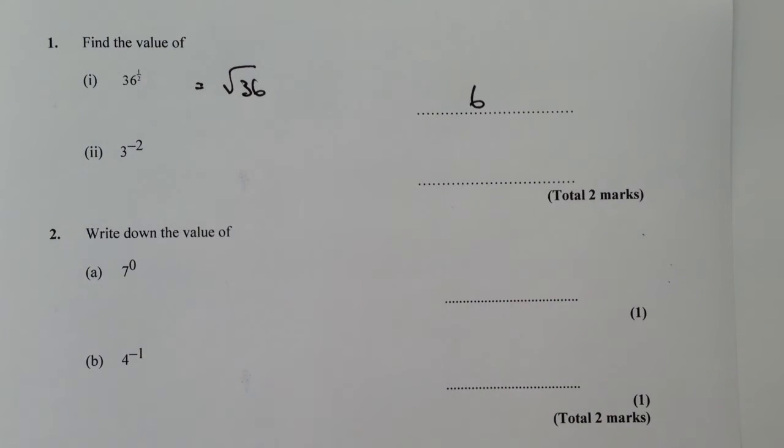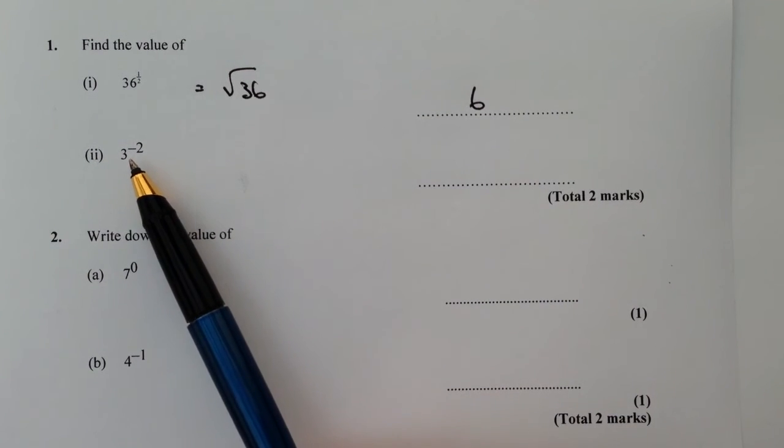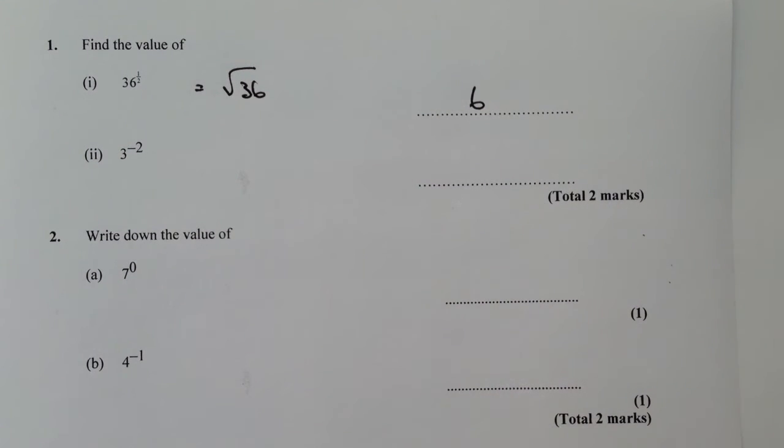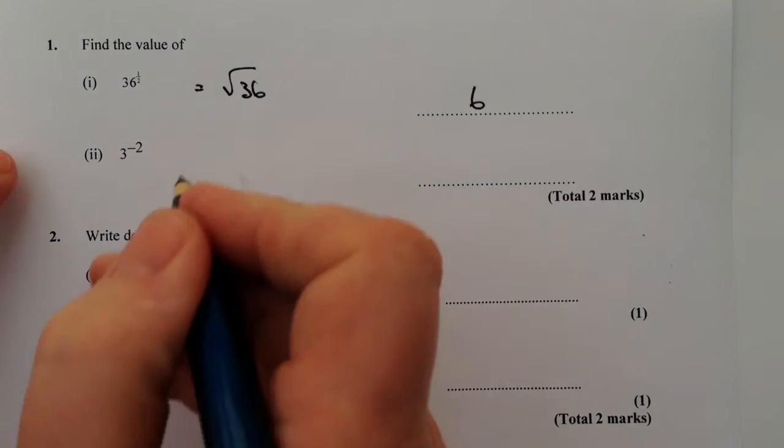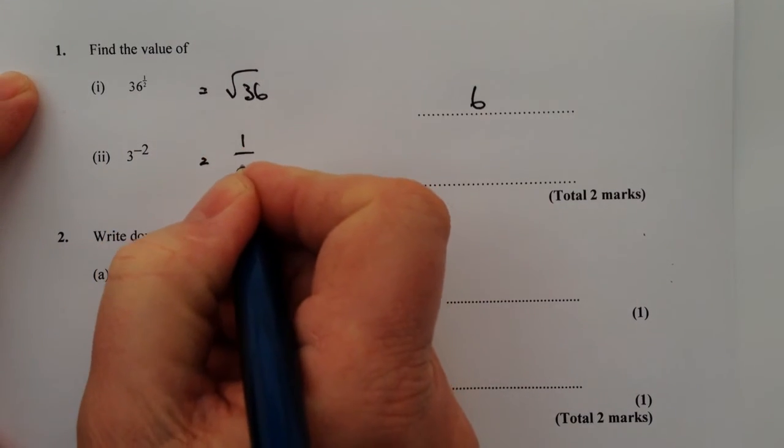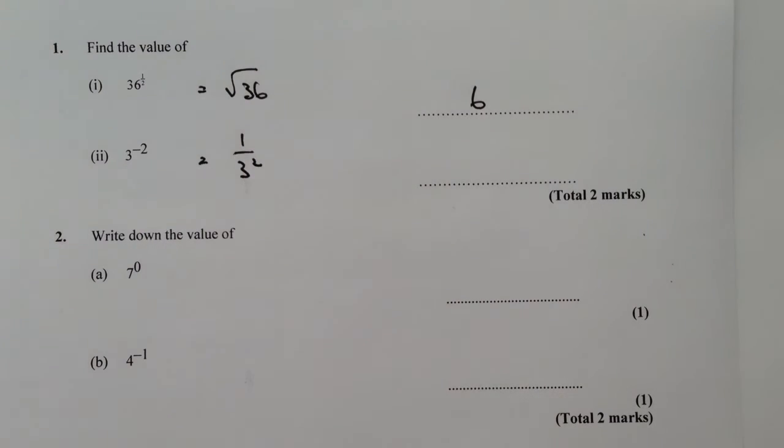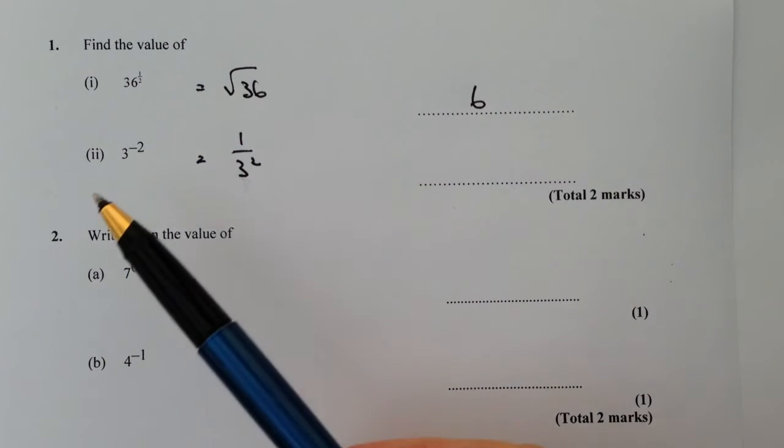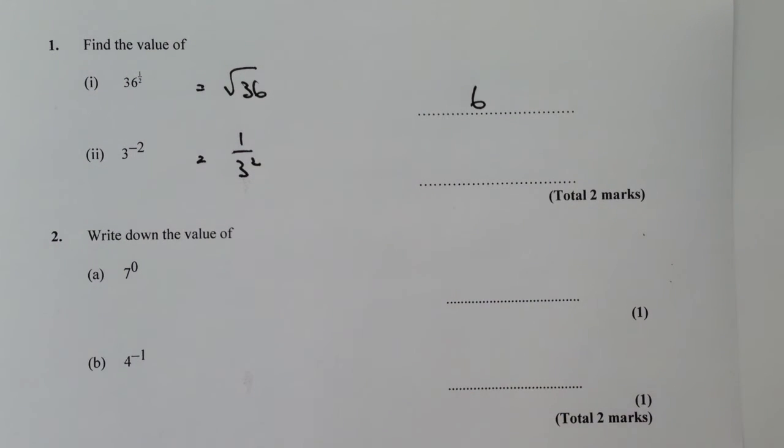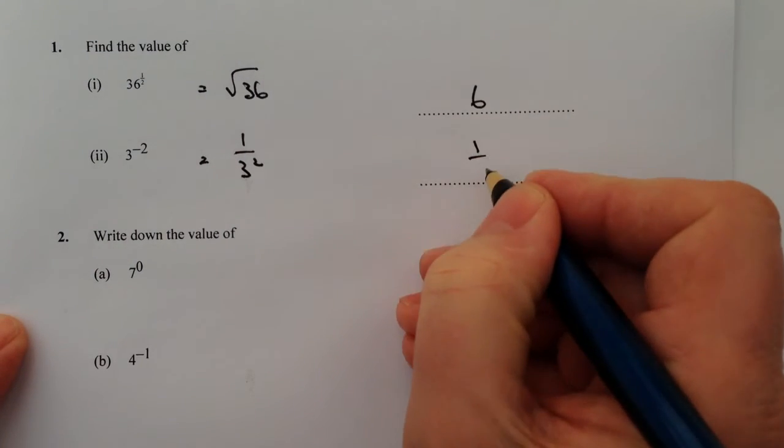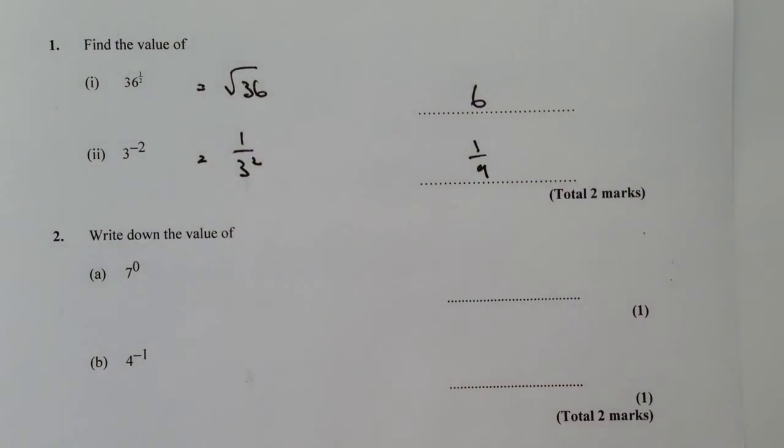The second one is, wherever you see a negative indice, it basically means it's the reciprocal. So the way we would write that would be 1 over 3 squared, it's the reciprocal of this number. So 1 over 3 squared, well that's going to be 1 over 9.